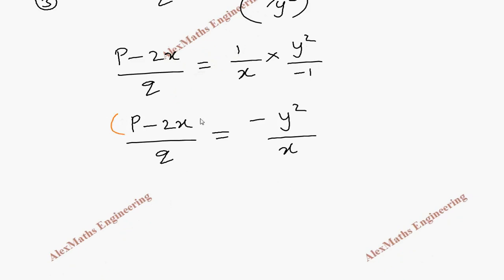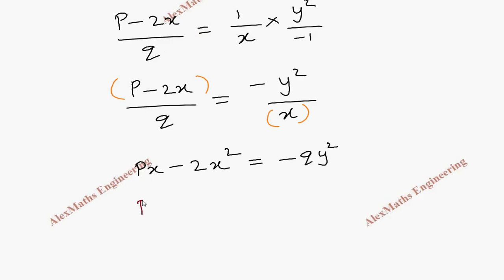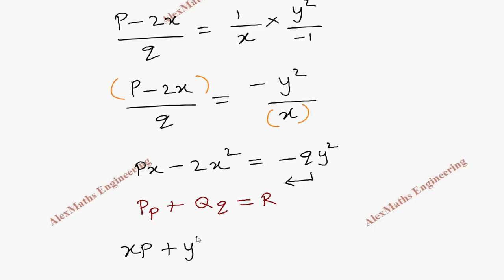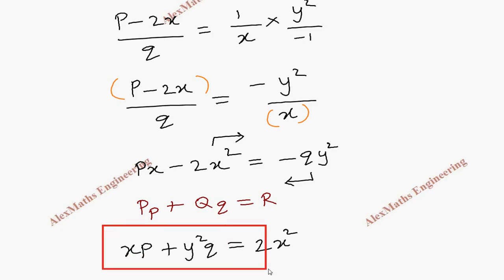If we cross multiply, we take the product of these two sides: px minus 2x squared equals minus qy squared. Our final answer should be in the form of capital P, small p, plus capital Q, small q, equals R. So the first term is x into p, written as is. Taking the other term to the other side gives plus y squared q, and taking the remaining term to the right hand side gives 2x squared. So the required partial differential equation after eliminating the arbitrary function is xp + y²q = 2x².